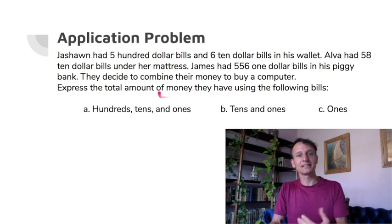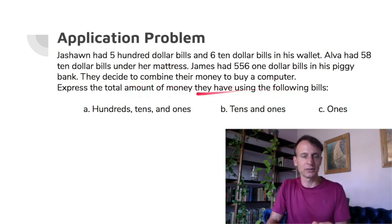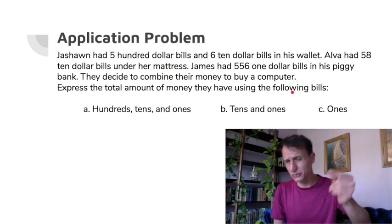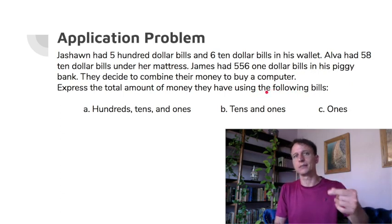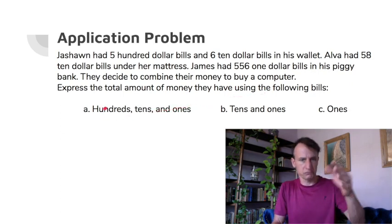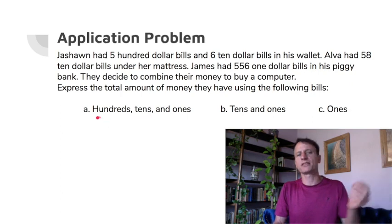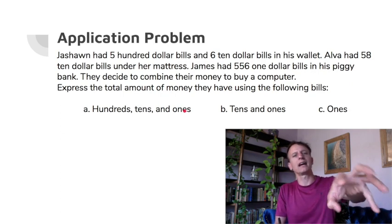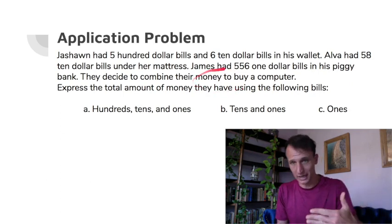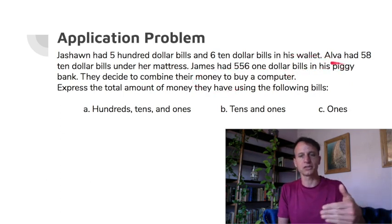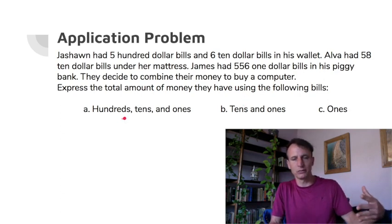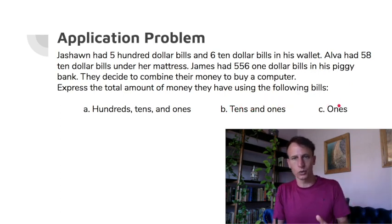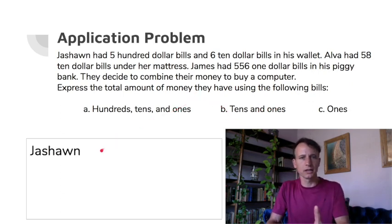They decide to combine their money to buy a computer. What's the total amount of money they have using the following bills? This is an important application problem — it really sets us up for today. We're going to figure out the total, then express it as: how many hundreds, tens, and ones would that number be? It's not asking how many hundreds, tens, and ones they actually have — it's asking, if you broke down that total amount, how many tens and ones would it be?